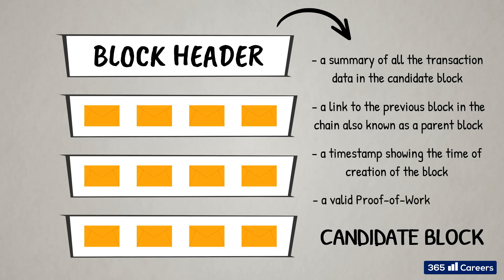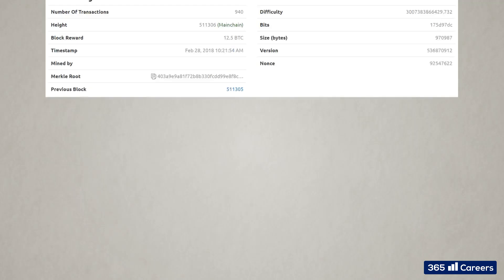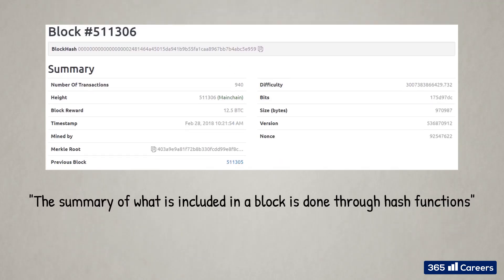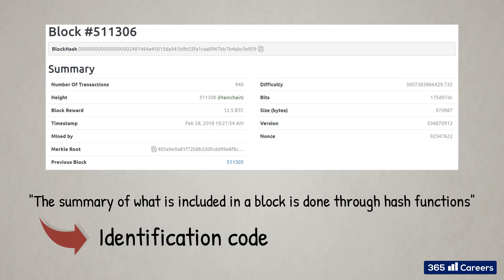The summaries of what's included in a given block are done through hash functions, which process data in such a way that results in a standardized unique identification code. This identification code is also referred to as a digital fingerprint. In this way, the system has a unique identifier for each block of transactions. Here are some examples of block headers as viewed in blockexplorer.com and blockchain.info.